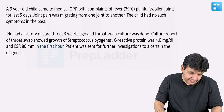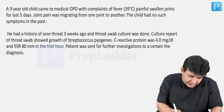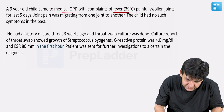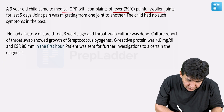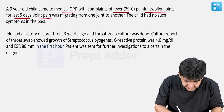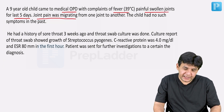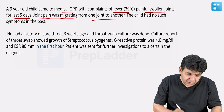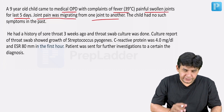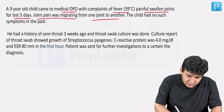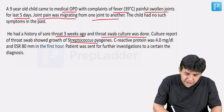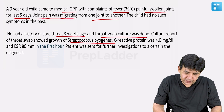Coming to another important question: a 9-year-old child came to the medical OPD with complaints of fever and painful swollen joints for the last 5 days. The joint pain was found to be migrating from one joint to another. The child had no such symptoms in the past. There is a history of sore throat 3 weeks ago, and throat cell cultures were done. The culture report shows growth of Streptococcus pyogenes, which is Group A Streptococcus.